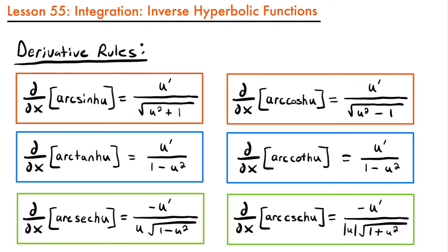Notice that similar to the inverse trigonometric functions and their derivative rules, the derivative rules for the inverse hyperbolic functions come in pairs. Look at these first two derivative rules for inverse hyperbolic sine and inverse hyperbolic cosine — their derivatives are very similar. We have u prime divided by the square root of u squared plus 1 for inverse hyperbolic sine, and for inverse hyperbolic cosine we have the same thing except inside the square root we have u squared minus 1, not plus 1.